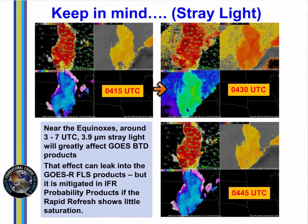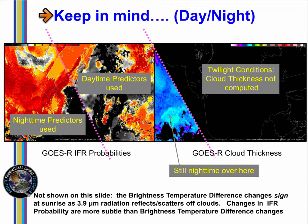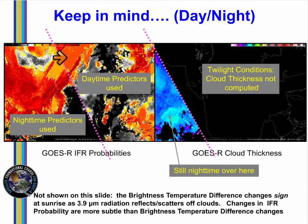These three figures contain brightness temperature difference in the upper right with a lot of stray light at 0430 UTC, IFR probability in the upper left, and GOES-R cloud thickness in the lower left. There is a discontinuity in IFR probabilities during the transition from day to night, or vice versa. Satellite predictors used during the day differ from those used at night. In general, IFR probabilities increase during the day because of changes in the statistical predictors used. The GOES-R cloud thickness product is not computed during twilight conditions, but is available all night and during most of the day for single layer water clouds.